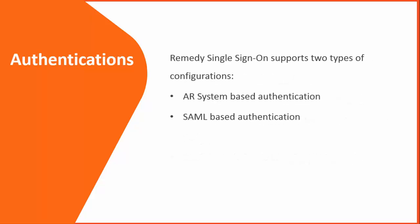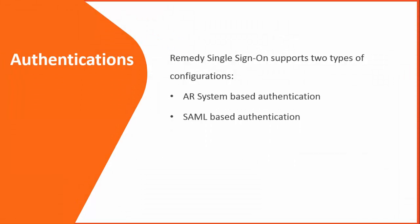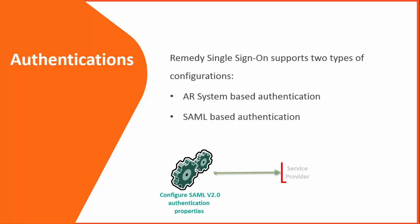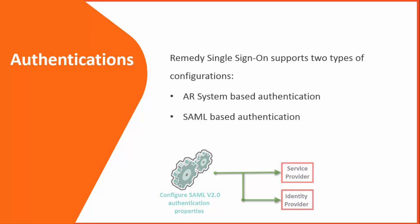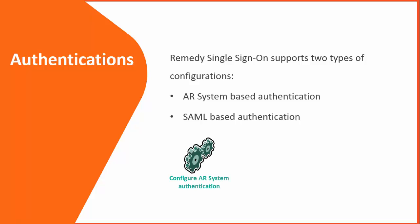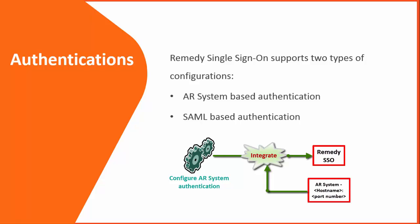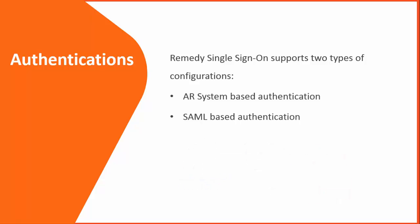The current release of Remedy Single Sign-On supports BMC Remedy AR system-based authentication and SAML V2-based authentication. To configure SAML V2 authentication, you need a service provider and an identity provider, which allow you to set connectivity between the service provider, identity provider, certificates, attributes, and so on. To configure BMC Remedy AR system authentication, you must integrate Remedy Single Sign-On by providing the AR system hostname and port number — the Remedy Single Sign-On area plugin then handles the authentication requests. For detailed information on authentications, please take a look at the authentication video.